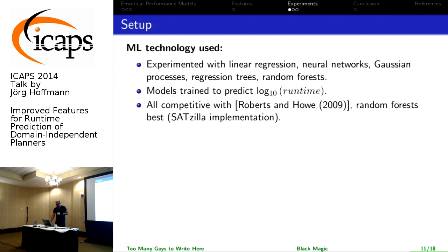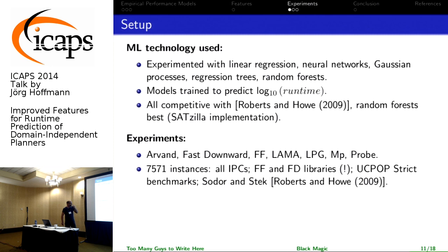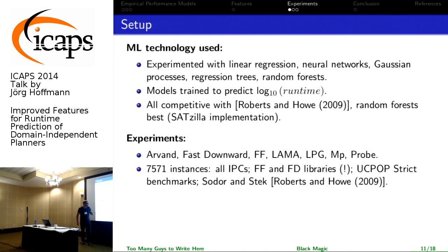There's a fairly comprehensive set of planners. About the 7,571 instances: they took all benchmarks from the IPCs, from the FD library, and from the FF library, which means some domains are there three times — perhaps with minor differences in instance sets. It's really hard to tell. My main issue is that there's some duplication in the benchmark set, and I think this is the main weakness the paper has at the moment.